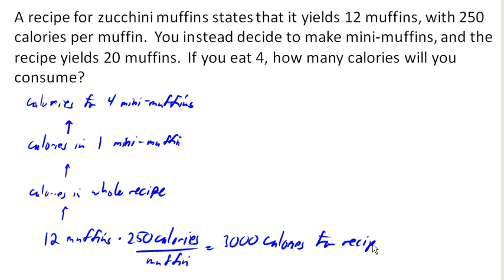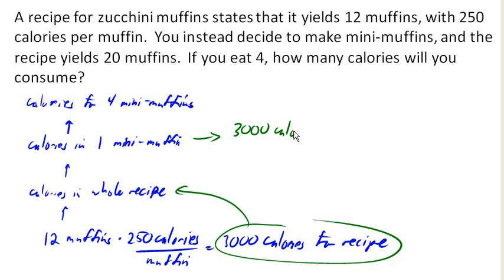Now, notice what we've done here is we've created a solution pathway working backwards to say, this is the information I need to know until we get to a place where we actually have the information. So now I know the calories in the whole recipe. So now I can go back to the next step up on my solution pathway and say, okay, so then to figure out the calories in one mini-muffin, I'm going to say 3,000 calories for the entire recipe divided by the 20 mini-muffins that that recipe produced, gives me 150 calories per mini-muffin.